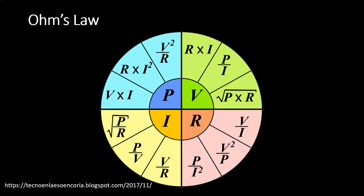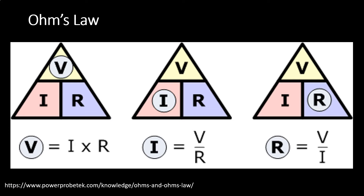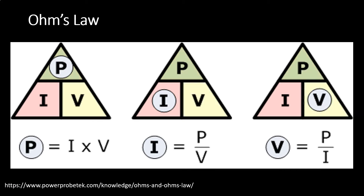Another way to look at the basic Ohm's law was the triangles that I showed last lecture. In this case, you find the one you're solving for with a circle around it, and then the other two are the given or the known values. This is for voltage, current, and resistance, and likewise this is for power, current, and voltage.